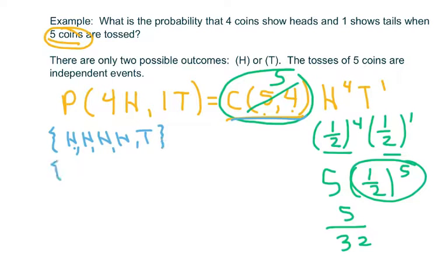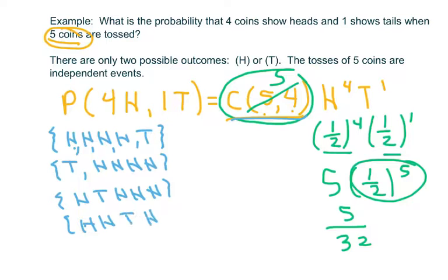So one possibility we could have tails first, heads heads heads heads. Then we could have heads tails heads heads heads. We could have heads heads tails heads heads. And then you could have heads heads heads tails heads.